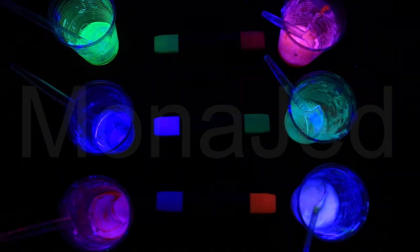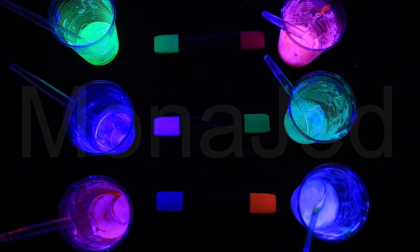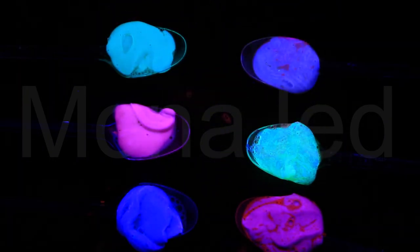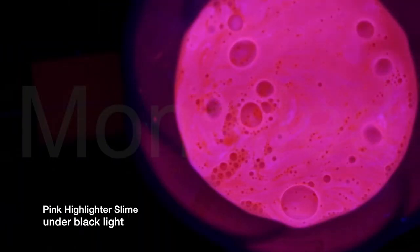Most fluorescent colored things, such as highlighters right here, contain phosphors. And you'll find them all in glow-in-the-dark products. Here are all the gorgeous highlighter slimes on spoons. This is what the pink highlighter looks like under black light.